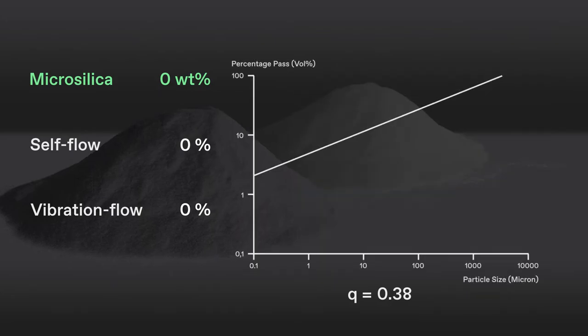A castable absent of Elkem microsilica mixed with water results in zero percent self-flow and zero percent vibration flow. The Q value will be too high. The absence of Elkem microsilica creates a situation where there is an undersupply of liquid to fill the internal pore system necessary to obtain flow. The castable appears as moist sand.